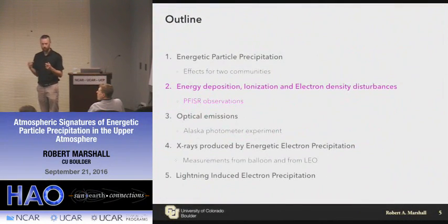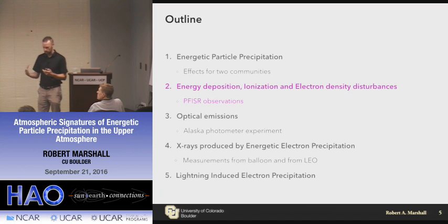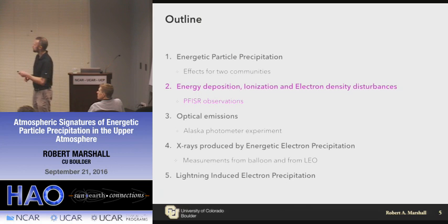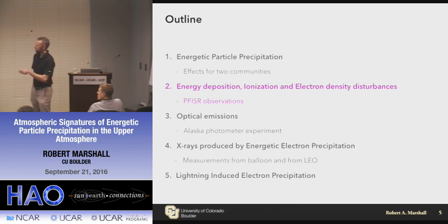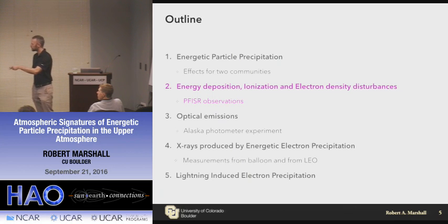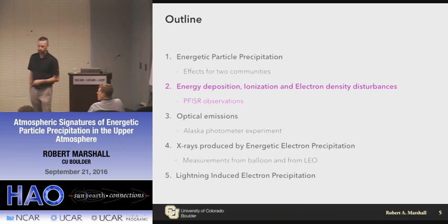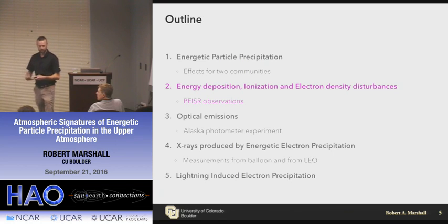I'm mainly focused right now on the actual diagnostics and predicting what those diagnostics would look like, which could then allow you to infer the actual precipitating flux and spectra once you make a measurement. Today I'll talk about the various diagnostics: energy deposition and disturbance of the electron density profiles, optical emissions, x-ray production and measurements, and at the end, if I have time, I'll introduce lightning-induced electron precipitation, which encompasses all of these aspects as well.